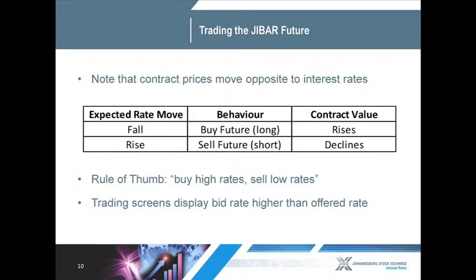To understand the trading mechanism, I must go back to the first thing I said at the beginning of the presentation: rates and prices move opposite to each other. So if the expectation is that interest rates are going to come down, we'd be buying the future or going long the future, and the contract value will rise. Likewise, if interest rates are expected to rise, we would sell the future. The simple rule of thumb is we buy high rates and we sell low rates. The trading screens will show the bid rates higher than the asking rates on screen.